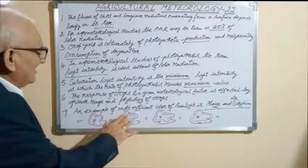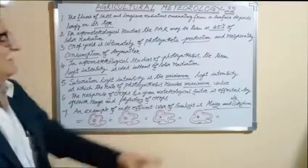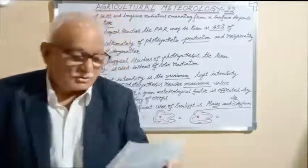An example of most efficient user of sunlight is maize. If maize is not given, it is sorghum. Most efficient user of sunlight is maize. Next choice is sorghum.